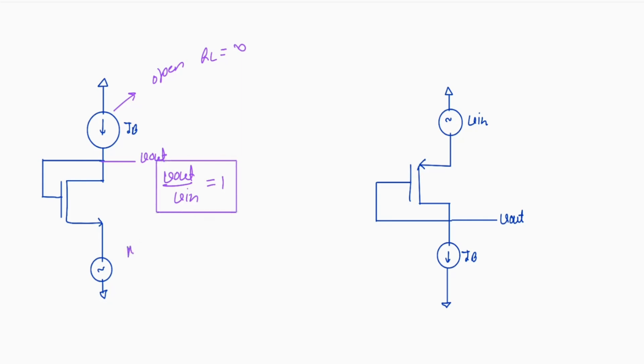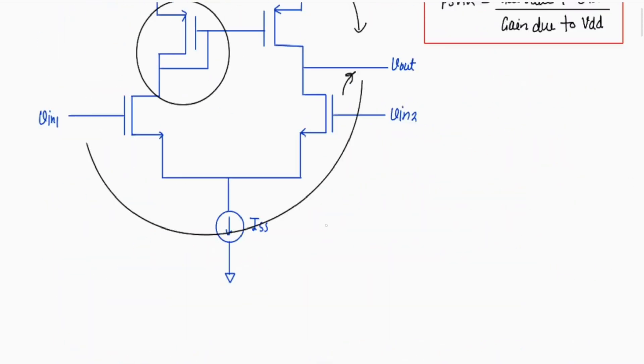So this is NMOS structure and this one is PMOS structure. If we are applying any input at the source, we are getting same output at the drain. This structure is same what we are using in our 5T OTA. Now we will again go to that structure.